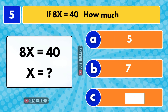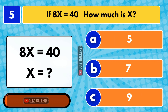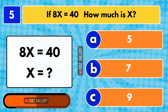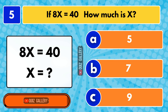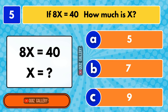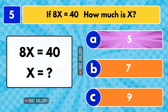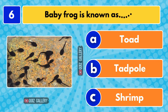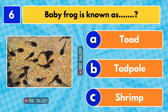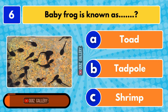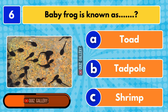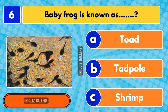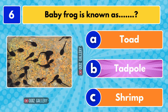If 8x is equal to 40, how much is x? X equals 5. Baby frog is known as... Tadpole.